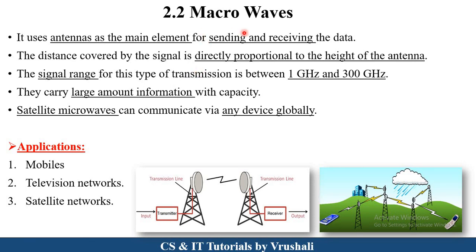The next type is microwaves. Microwaves send information between antennas — one antenna sends information to another antenna, which works as a receiver. The transmission distance is directly proportional to the height of the antenna. Microwaves are used in mobile communication and television networks. One of the best examples of microwaves is satellite networks — for instance, you can watch a live cricket match from Australia on your TV through a satellite network. Their transmission rate is between 1 gigahertz to 300 gigahertz.